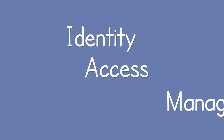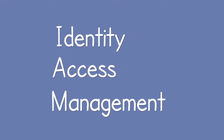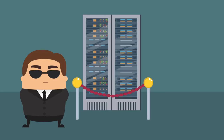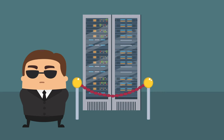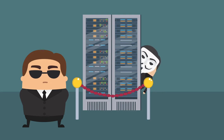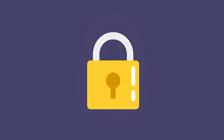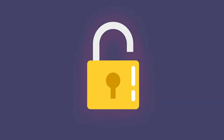Identity and access management, or IAM, is the structure you have to protect all that data and prevent it from getting into the wrong hands. Because not only could a security breach be horrific for business, there's also a lot of compliance laws you could be breaking.